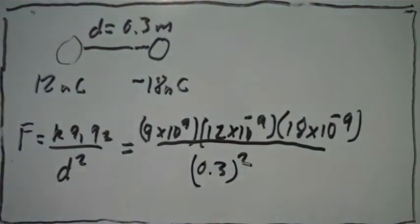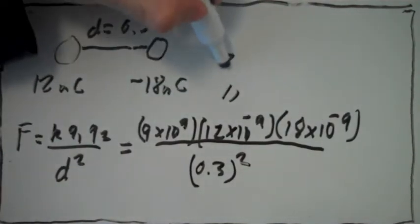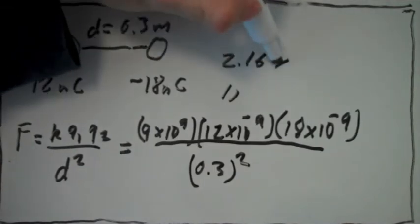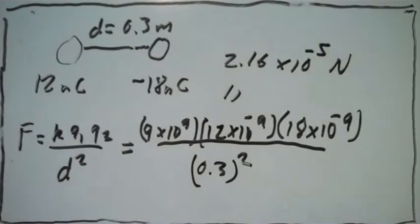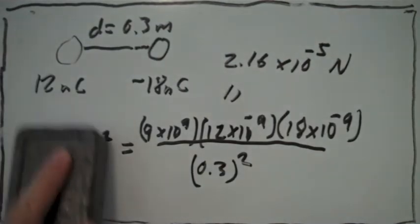If we plug these numbers into a calculator, we find the total force between the spheres is 2.16×10^-5 newtons, and the force is attractive because one sphere is positive and the other one is negative.